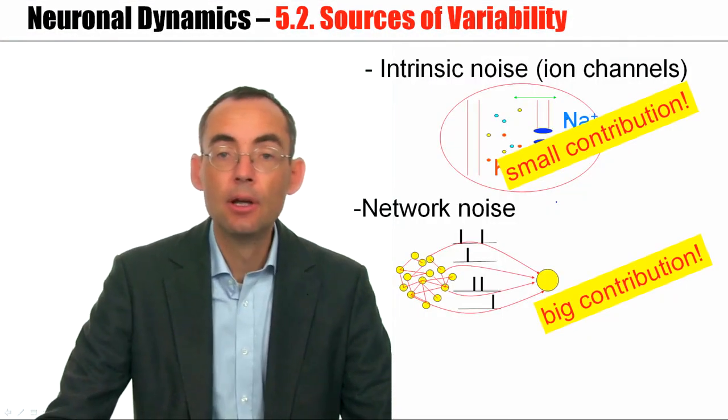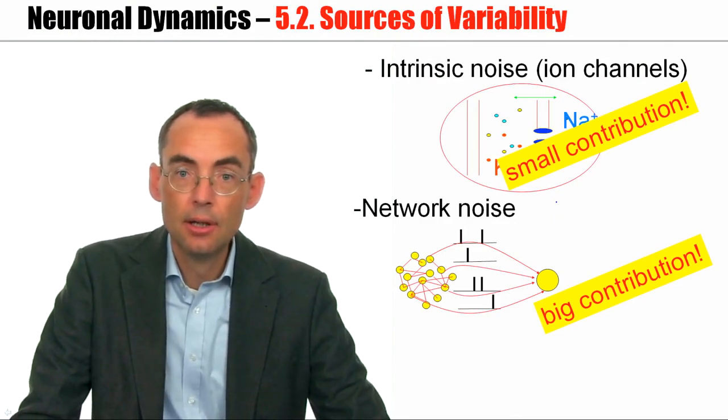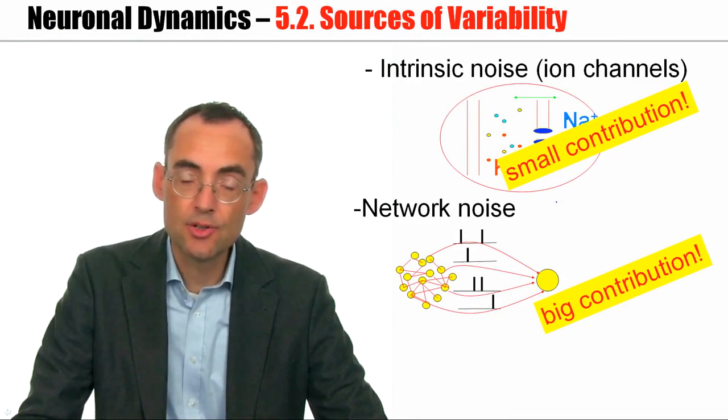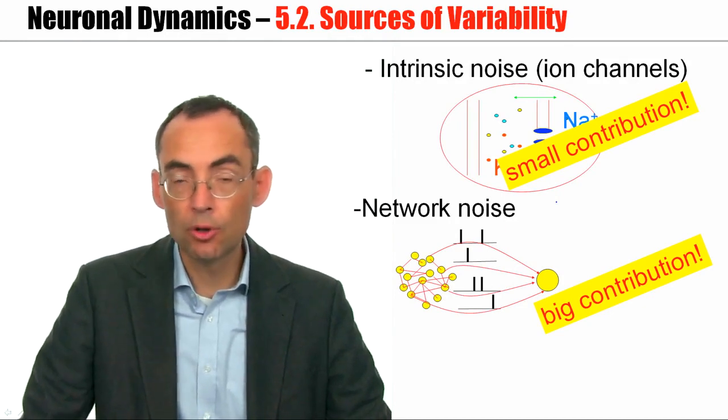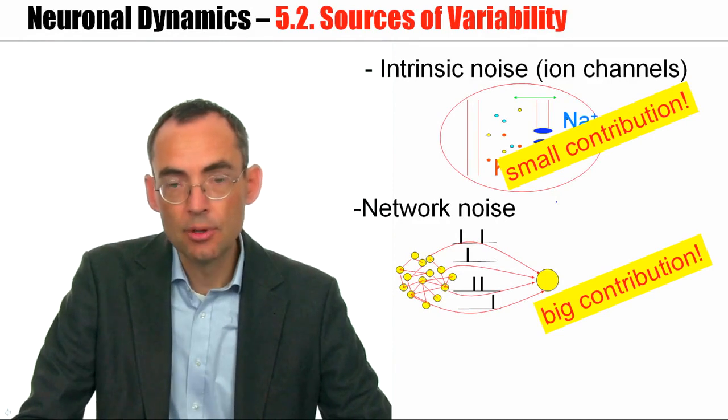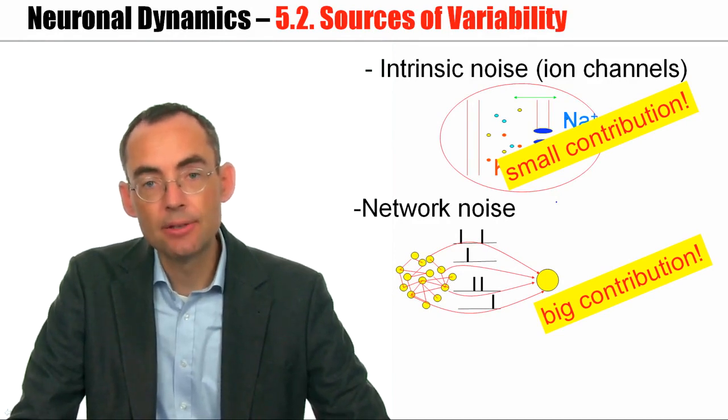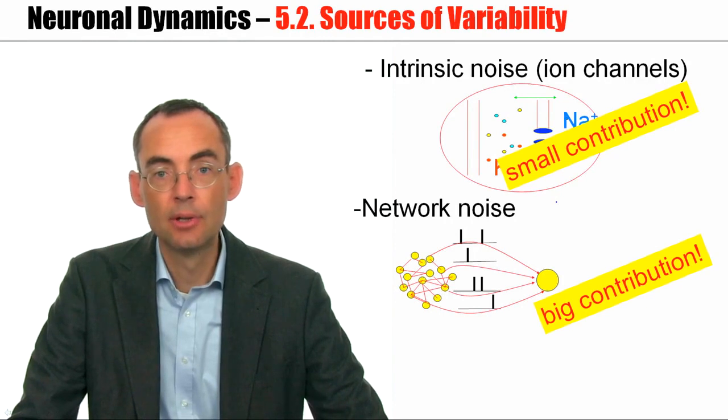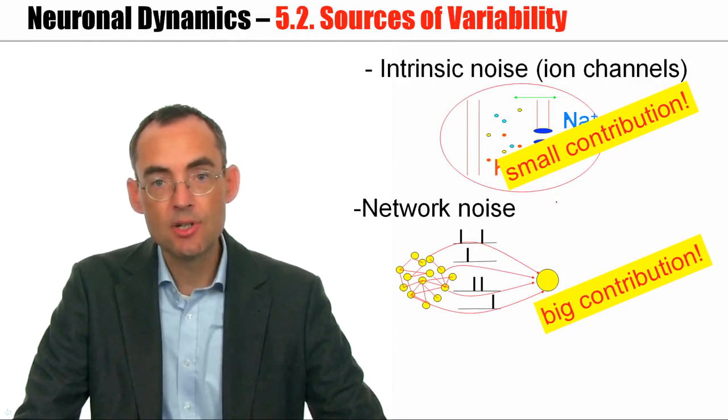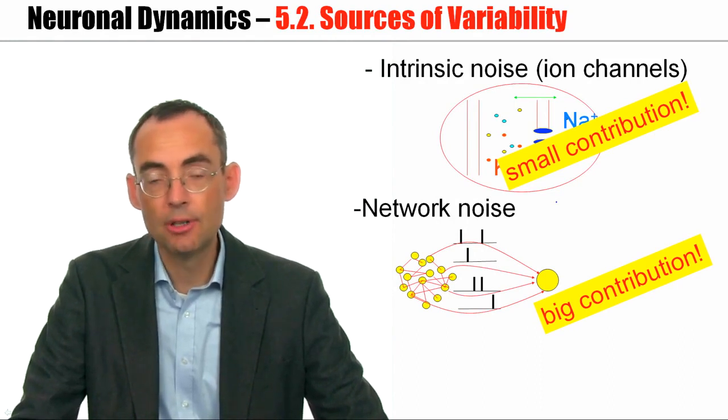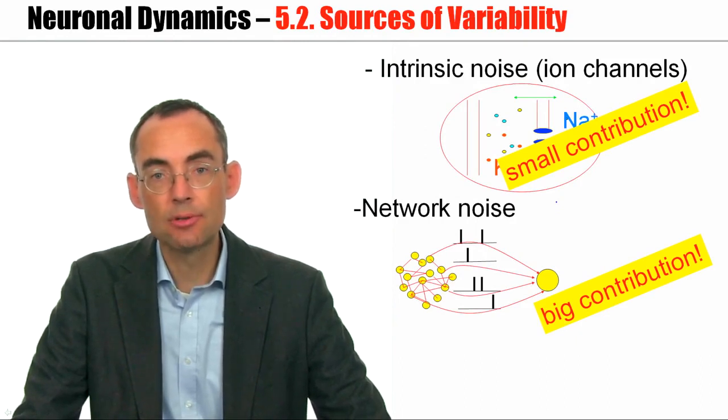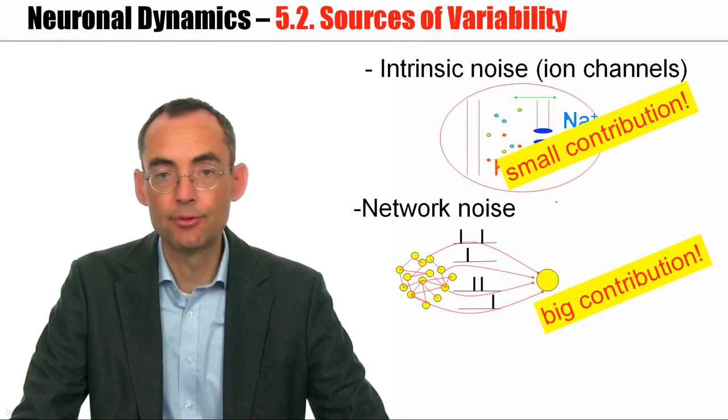So let's summarize. Neurons show fluctuations. These fluctuations have two different potential sources. The first one is intrinsic noise. Intrinsic noise seems to be a small contribution. The bigger contribution arises from the fact that a neuron is embedded in a brain network where it receives stochastic spike arrivals from many other neurons. And interestingly, a deterministic network of leaky integrate-and-fire neurons with random connectivity can reproduce the fluctuations of membrane potentials and the broad interspike interval distributions that experimentalists have observed in vivo.